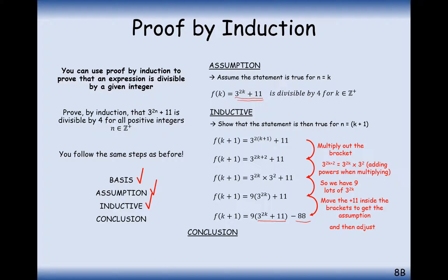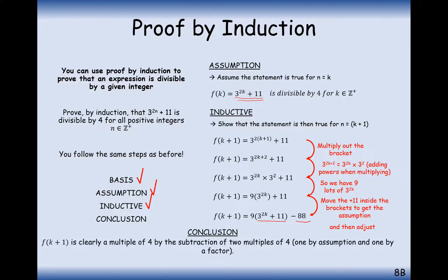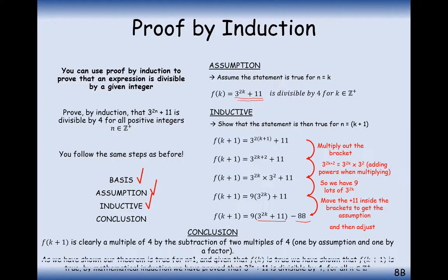In the conclusion: f(k+1) is clearly a multiple of 4 by the subtraction of two multiples of 4 — the first by assumption, the second by a clear factor of 4. As we have proven our theorem true for n equals 1, and given that f(k) is true, we have shown that f(k+1) is true. Therefore, by mathematical induction, we have proved that 3 to the power of 2n plus 11 is divisible by 4 for all n in the positive integers.